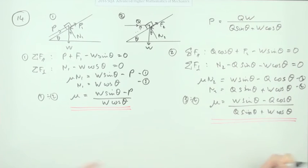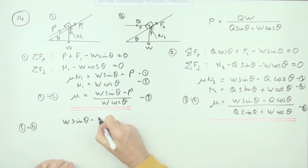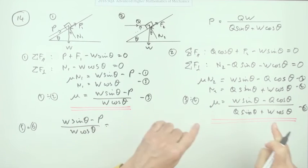P's and Q's and W's and θ's. So equating the two of these now, I'll give them names again. I've used three four, so if I call that five and I call that six, and I'll say five equaling six means that W sin θ minus P over W cos θ equals this.